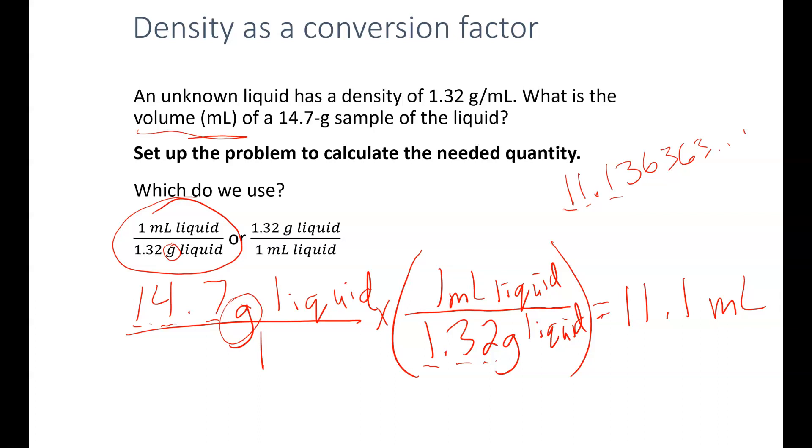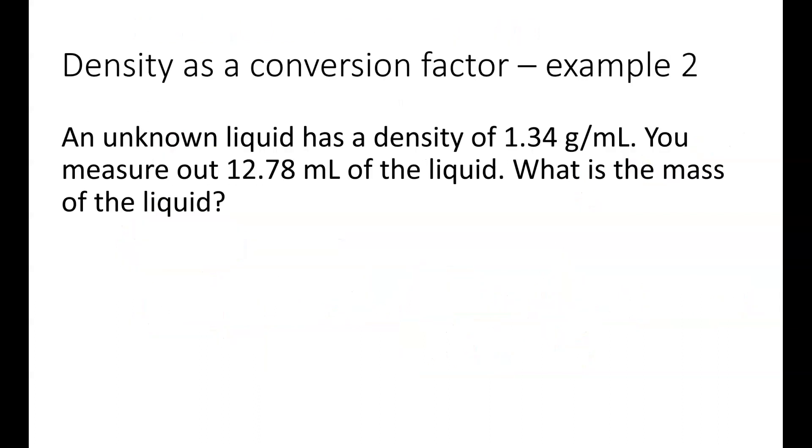Let's take a look at another example. We have an unknown liquid that has a density of 1.34 grams per milliliter. We measure out 12.78 milliliters of the liquid, and we want to know the mass of the liquid. Once again, this is our density, 1.34 grams per milliliter. Our volume is 12.78 milliliters. And we're looking for the mass. Mass, remember, is grams. So it helps to pull out the information. Go ahead and write on your problems. Make notes.